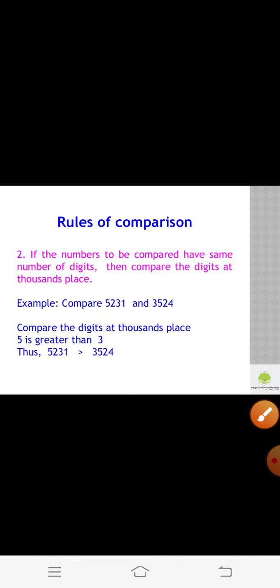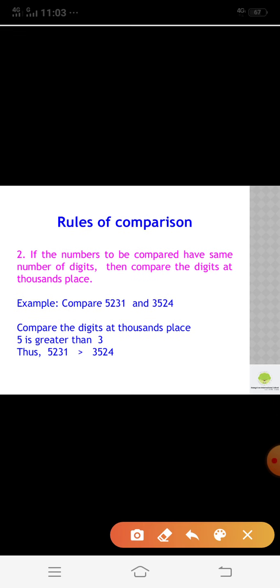If the numbers to be compared have the same number of digits, then compare the digits at the thousands place. Let's see the example: compare 5231 and 3524. Here, both numbers have the same number of digits, so we have to compare the digits at the thousands place. Here, 5 is greater than 3, so 5231 is greater than 3524.